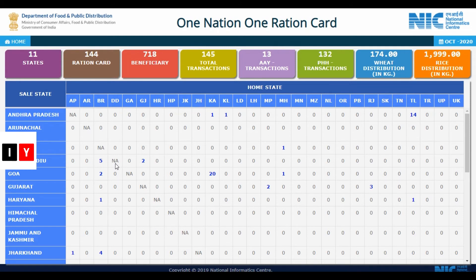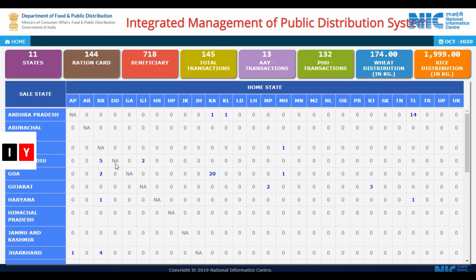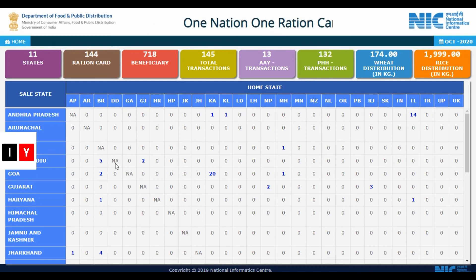The card will comprise a 10-digit standard ration number. The first two digits correspond to the state code, while the next two digits are the running ration card number. Beside these four digits, another set of two digits will be appended to the ration card number.